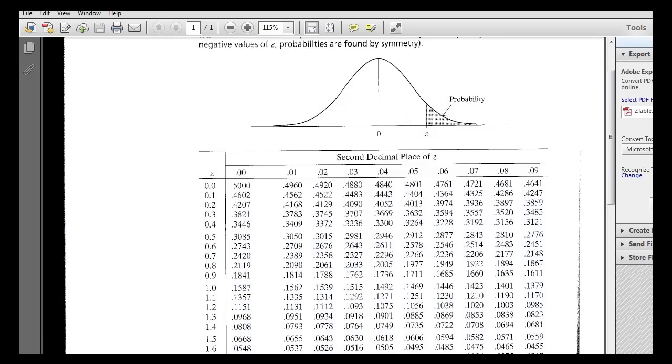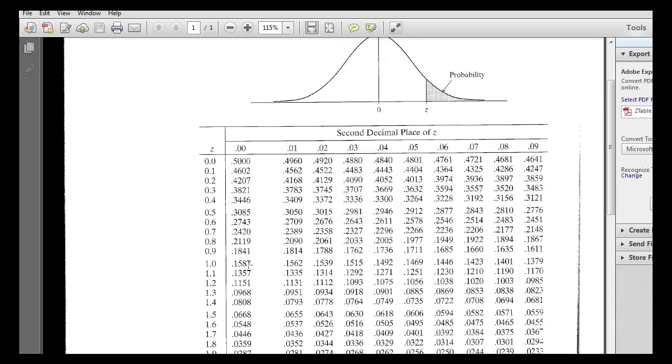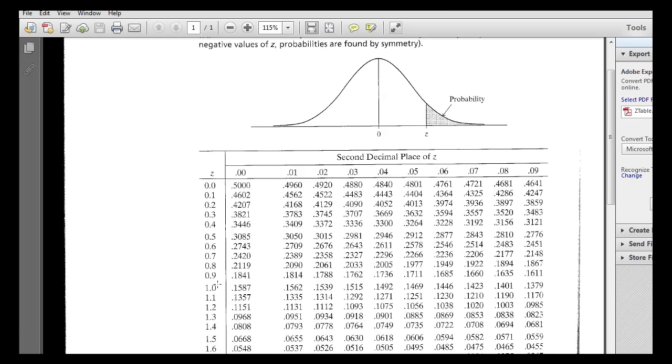So if we wanted to look up the p-value, or the proportion of observations that are to the right of, let's say, 1.23, z equals 1.23. So 1.23, then we'd go to 1.2, and we'd go over to 3, see the 3 right here?